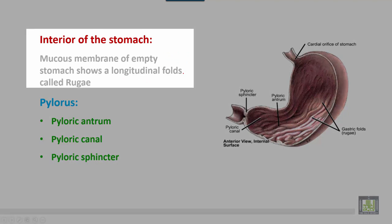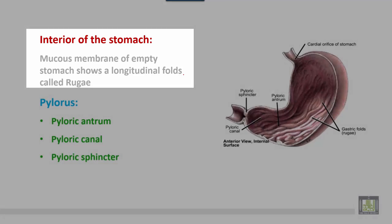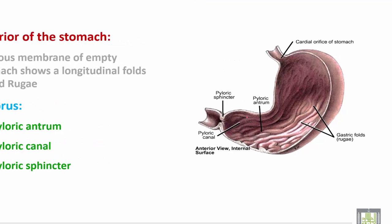The interior of the stomach, or the stomach from inside: the mucous membrane of the empty stomach shows longitudinal folds called the rugae. Parts visible from inside include the pyloric antrum, pyloric canal, and pyloric sphincter.